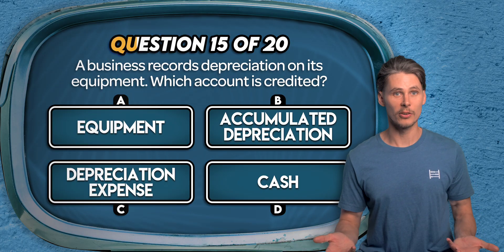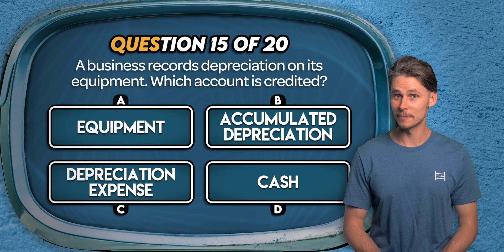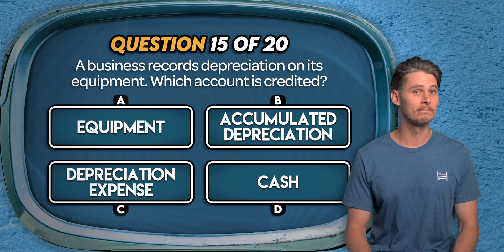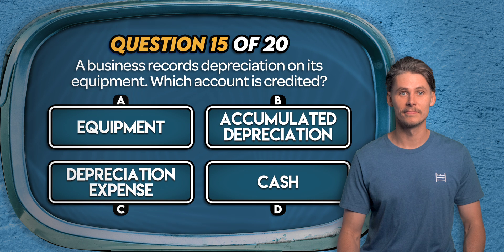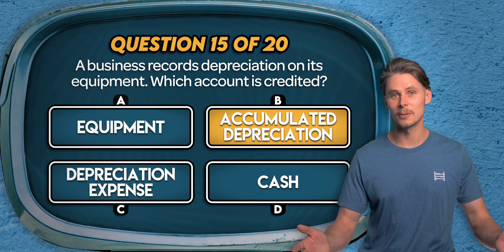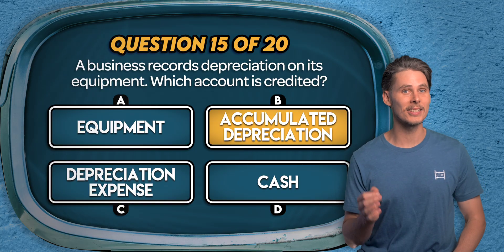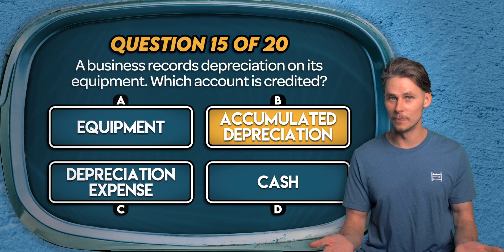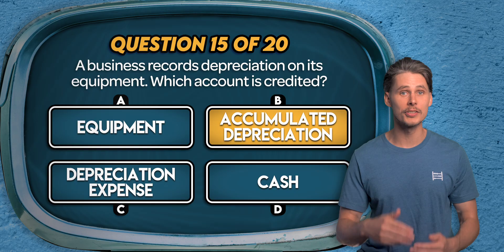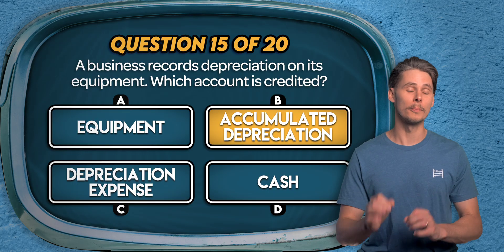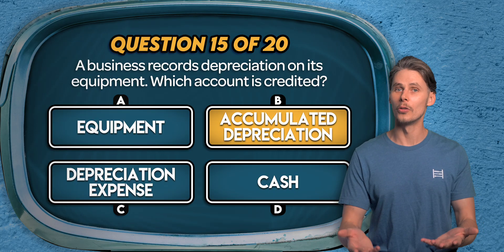Question 15. A business records depreciation on its equipment — which account should they credit? Equipment, accumulated depreciation, depreciation expense, or cash? It's B — accumulated depreciation. Depreciation reduces the book value of equipment over time, but instead of crediting the asset directly, we credit accumulated depreciation. This is a contra-asset account which runs against fixed assets on the balance sheet. The other side is a debit to depreciation expense, recording the cost on the income statement.